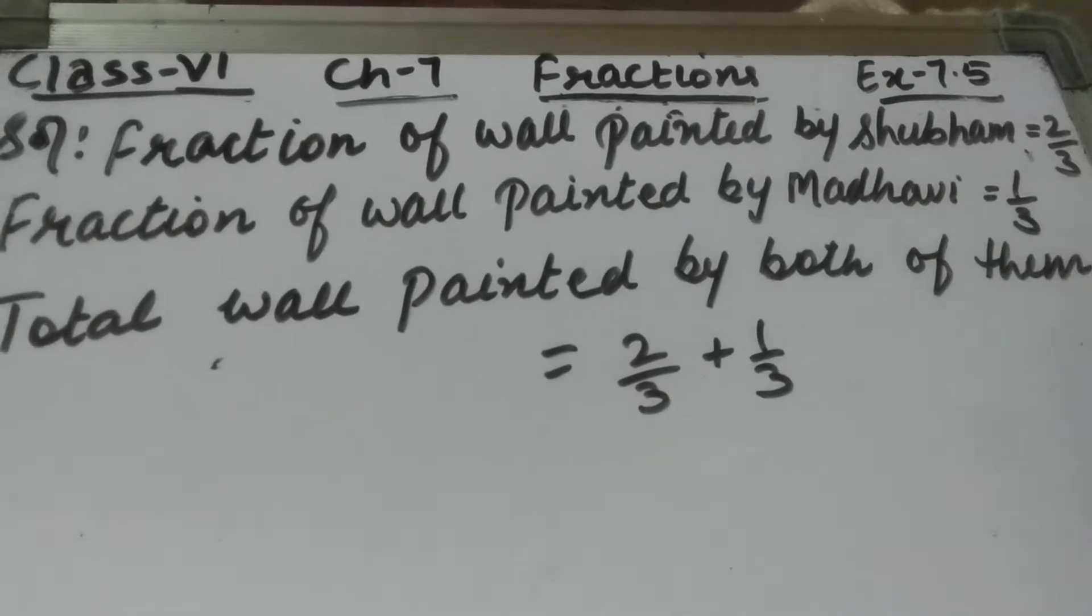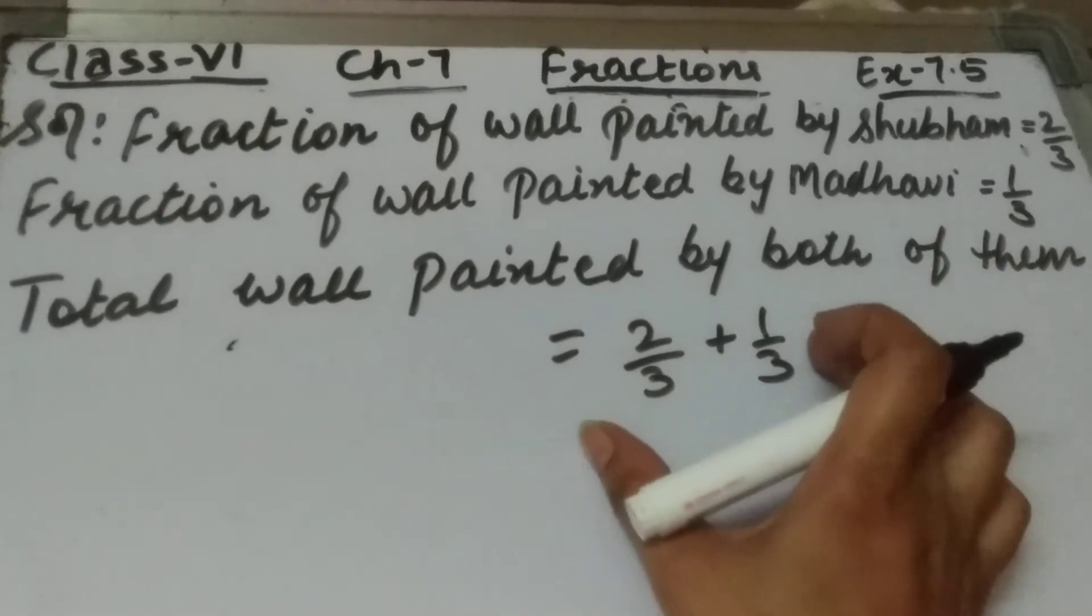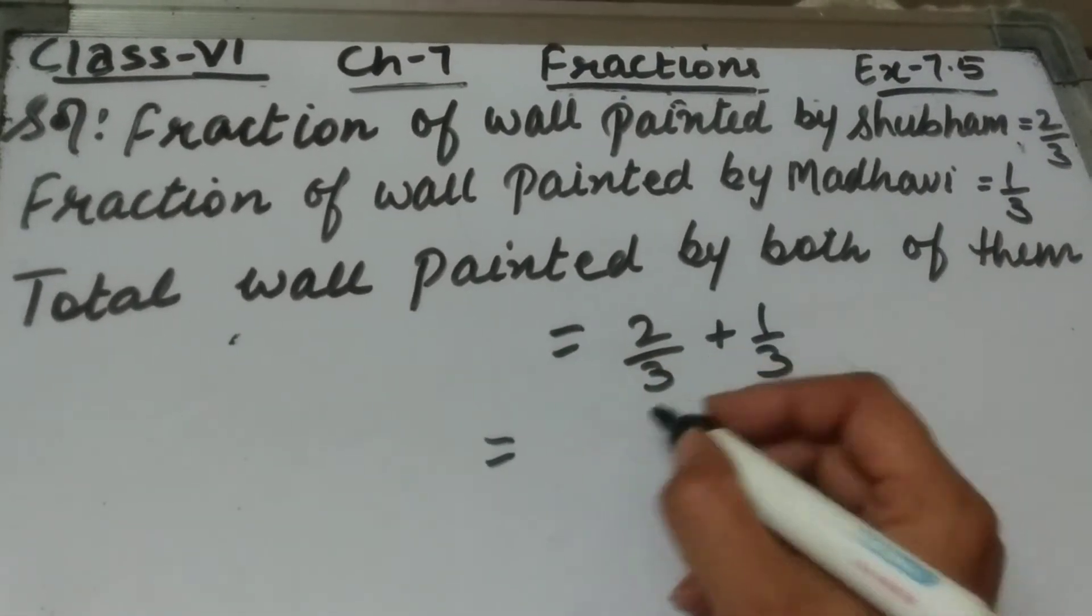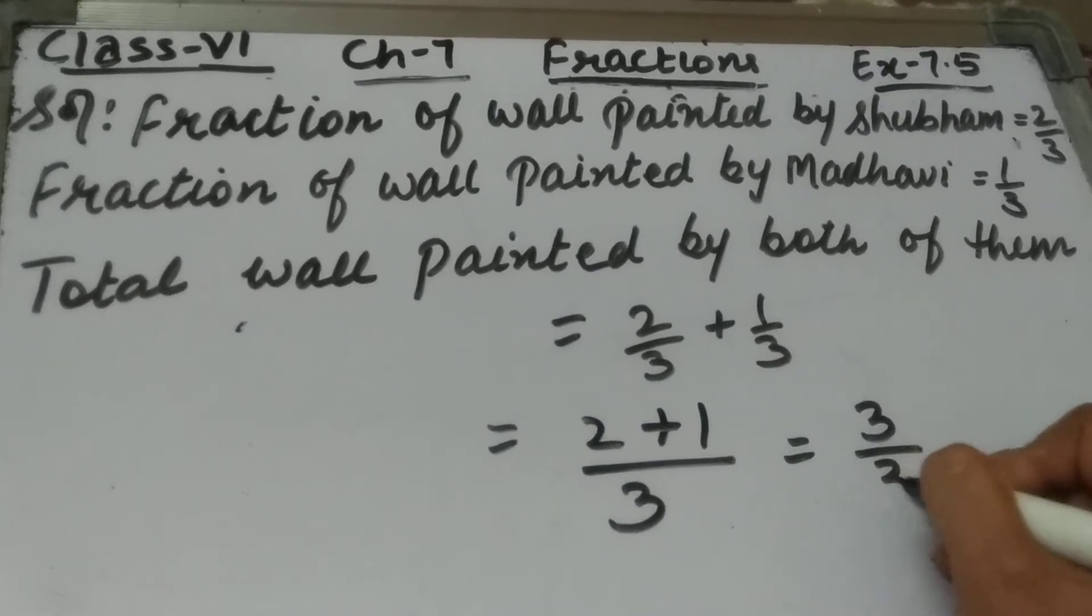Now we have to find the total wall painted by both of them. We will add these two fractions, 2/3 and 1/3. As these are like fractions, we will add only the numerators and the denominator will remain the same. So this will be 3/3.